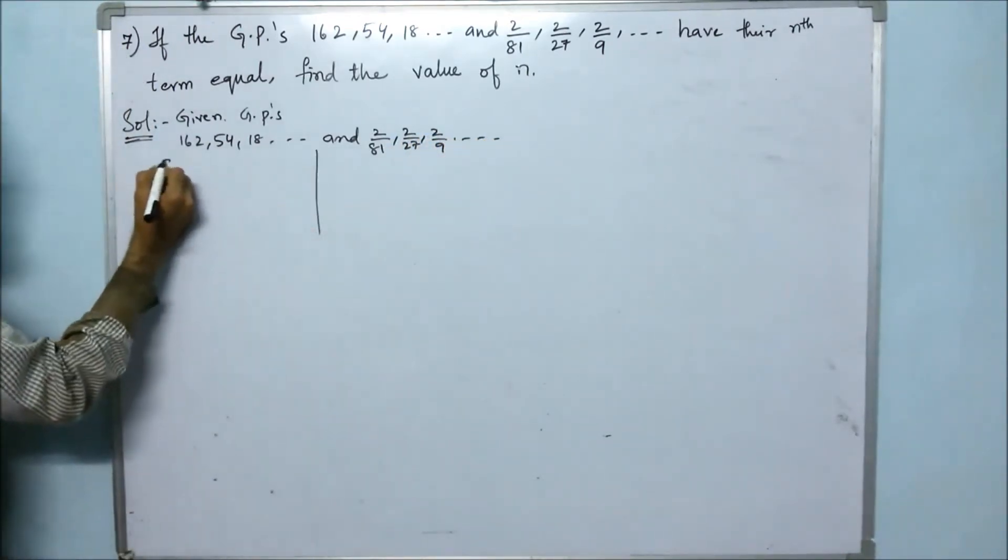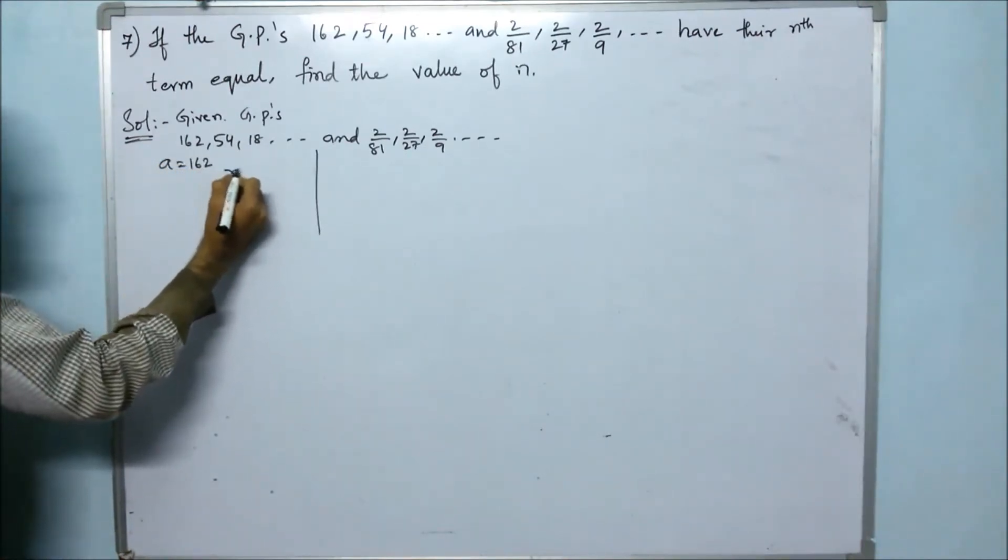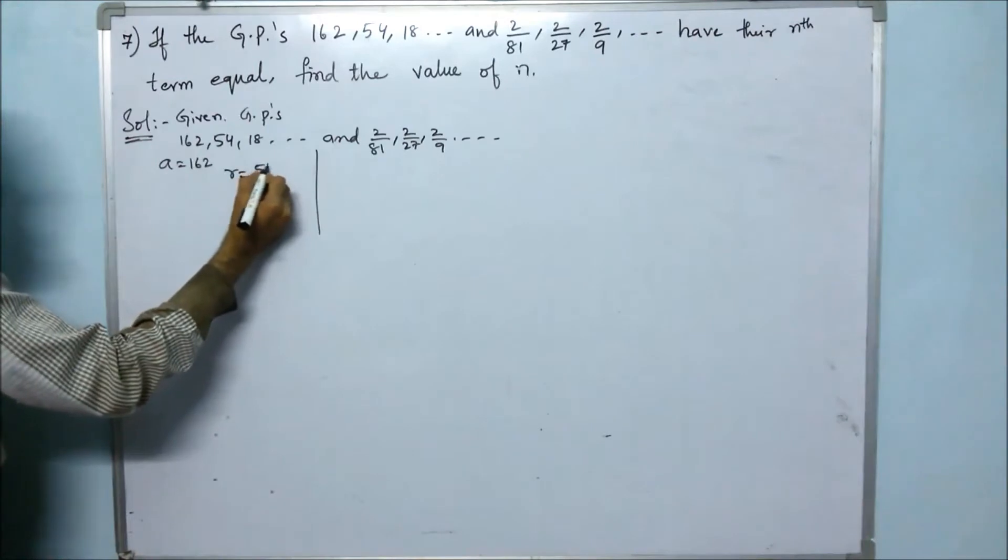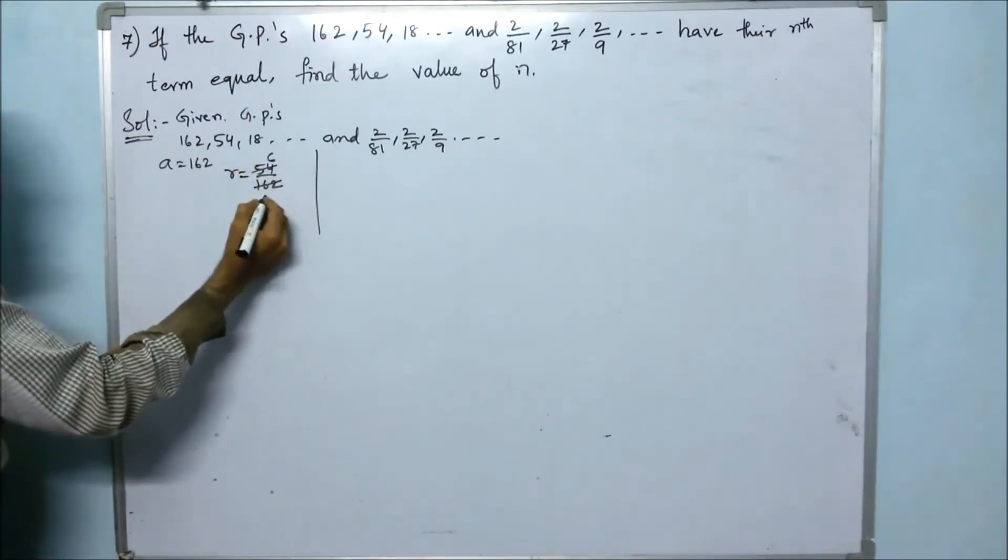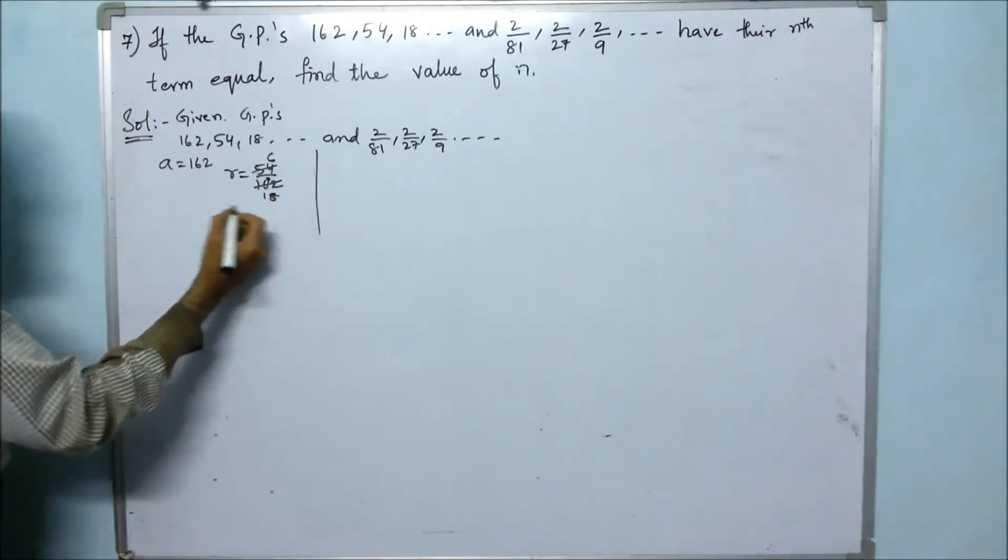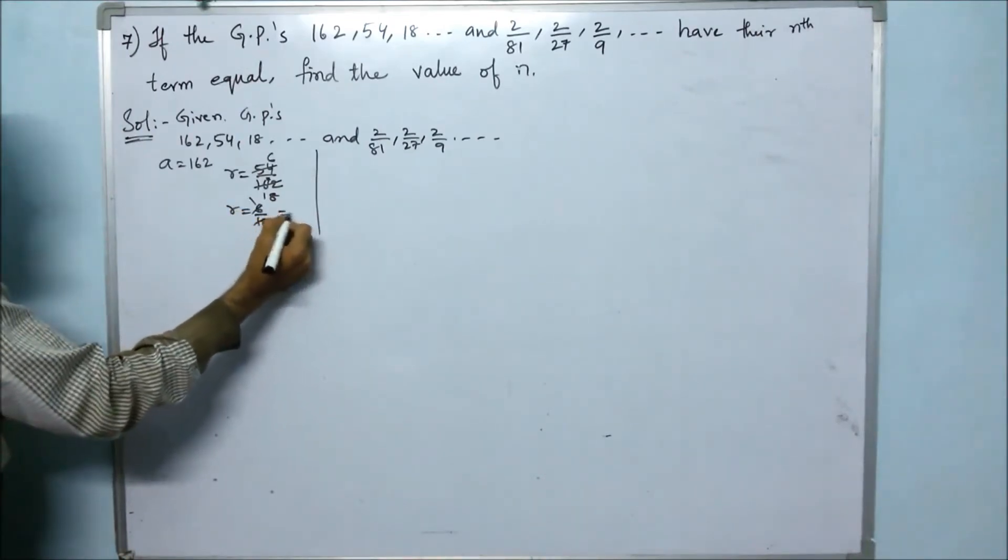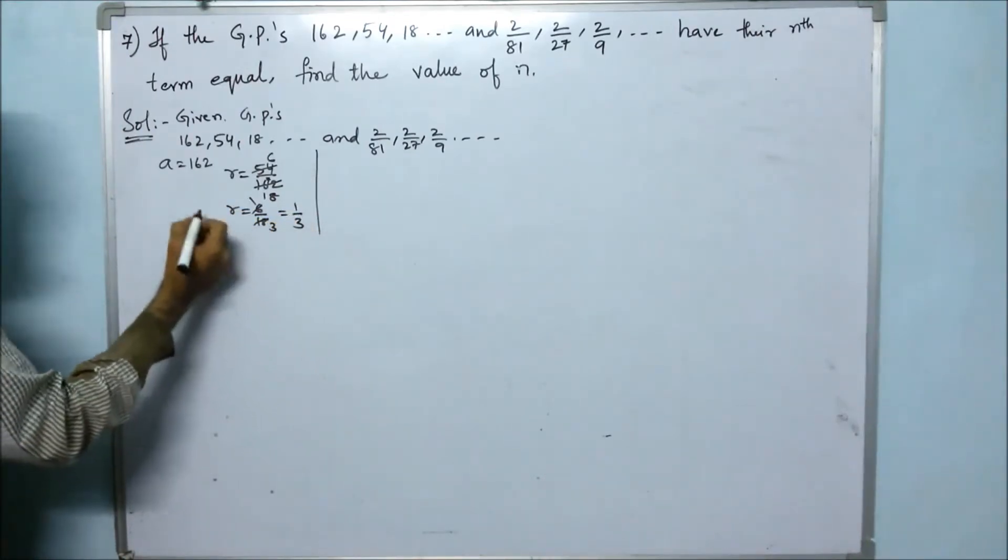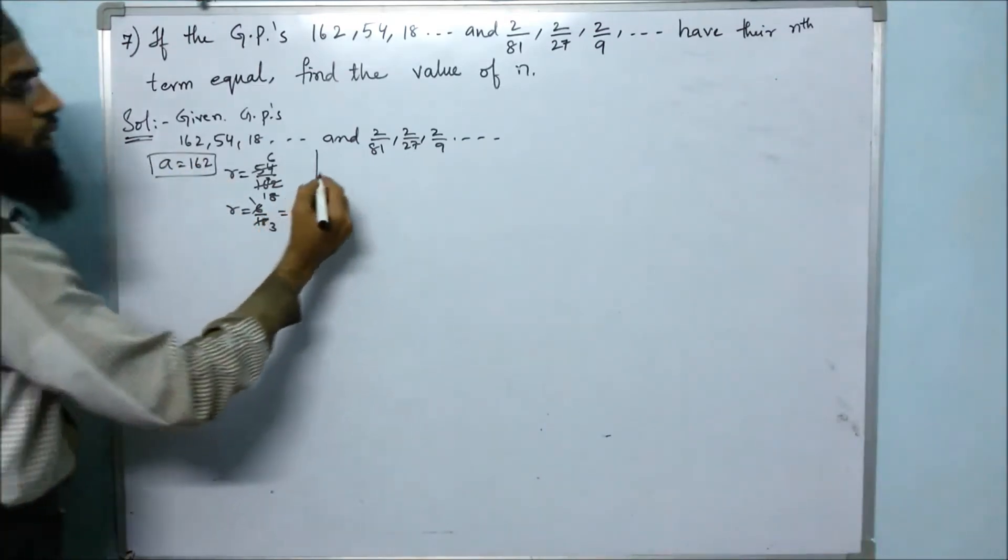For the first GP, A is the first term, which is 162. R equals A2/A1, so 54/162. Simplifying: 54/162 equals 6/18 equals 1/3. Therefore A = 162 and R = 1/3.